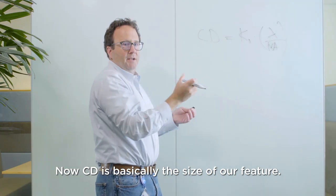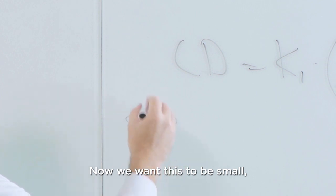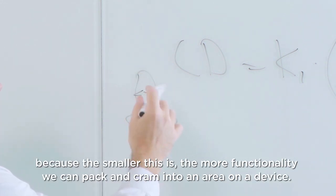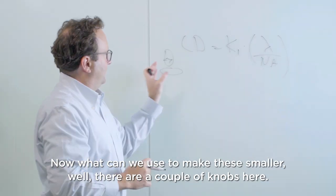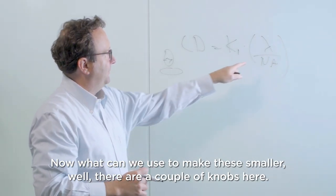Now CD is basically the size of our feature. We want this to be small because the smaller this is, the more functionality we can pack into an area on a device. Now what can we use to make these smaller? Well, there's a couple of knobs here.